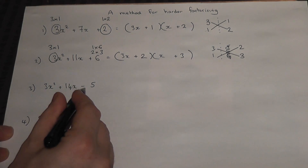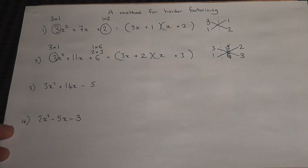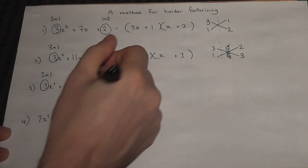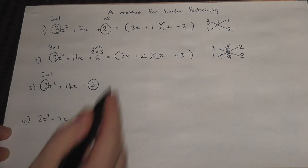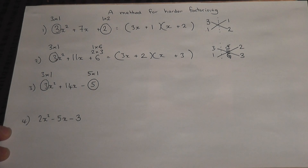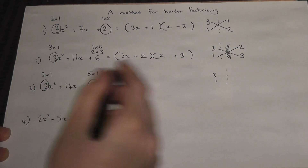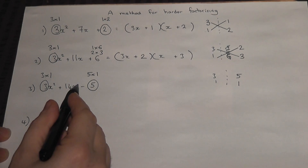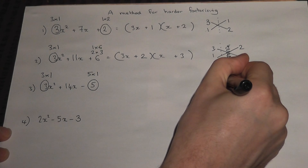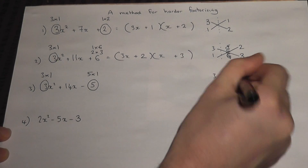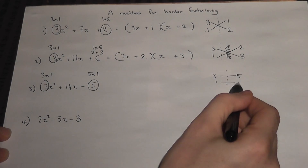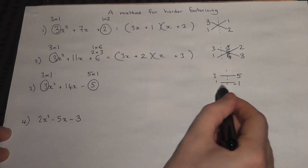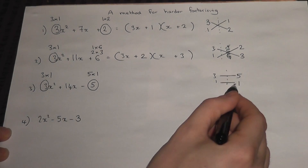This method can be adapted to when the third term is negative. We do the same technique with a subtle change at the end. Again, this one still is 3x squared, which is 3 times 1. Look at the 5 — you can ignore the negative for the moment — that's 5 times 1. So 3 and 1, and 5 and 1. We somehow pair these off to make 14, but one of them must be negative. If I do 3 times 5 and 1 times 1, I get 15 and 1, and 15 take away 1 is 14.